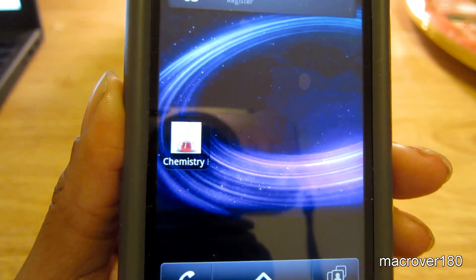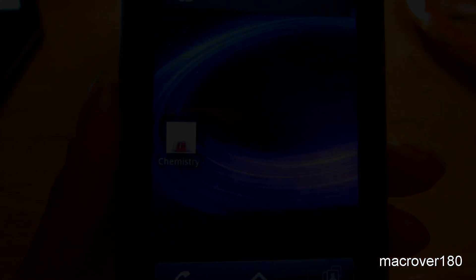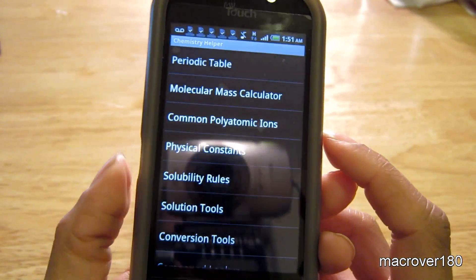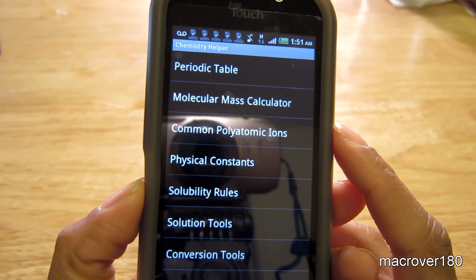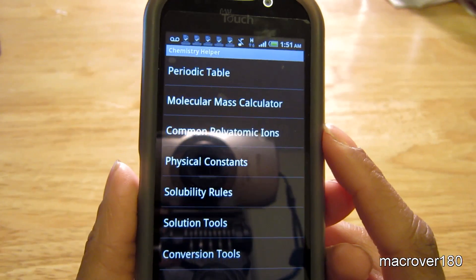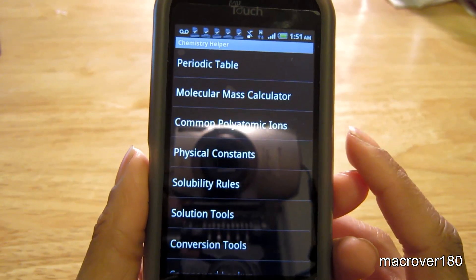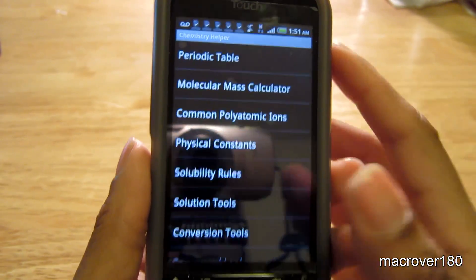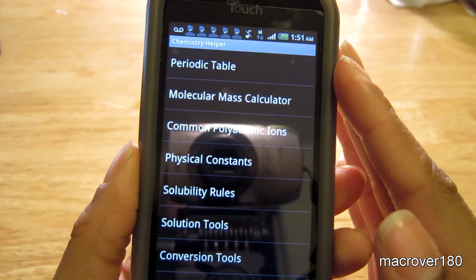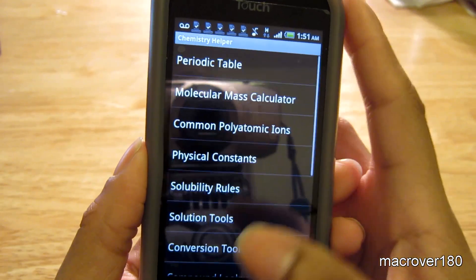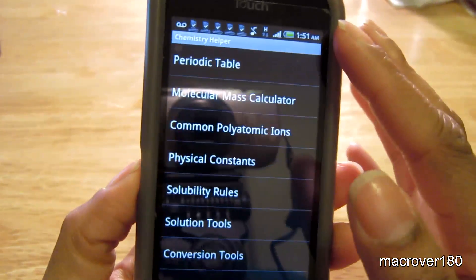So with that said, let's get into it. As I've said, Chemistry Helper is a simple app designed as a quick reference for chemistry students. So you're greeted with this list view here. Let's get into it, each one individually.